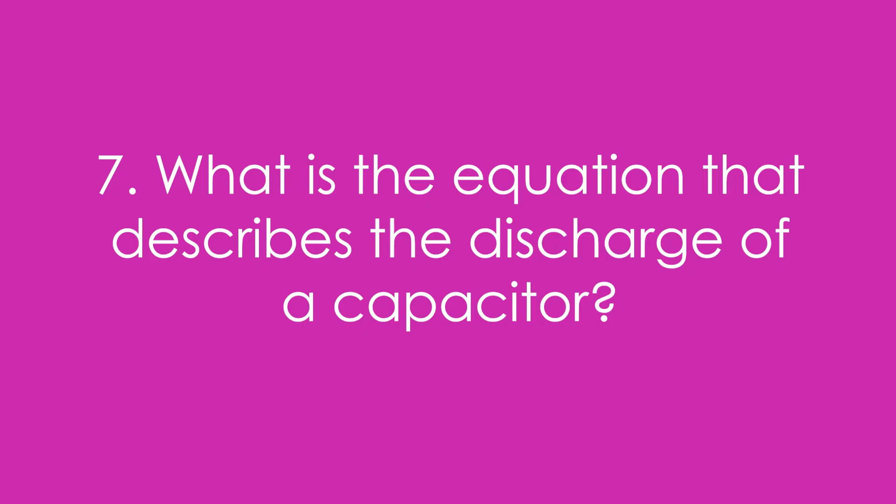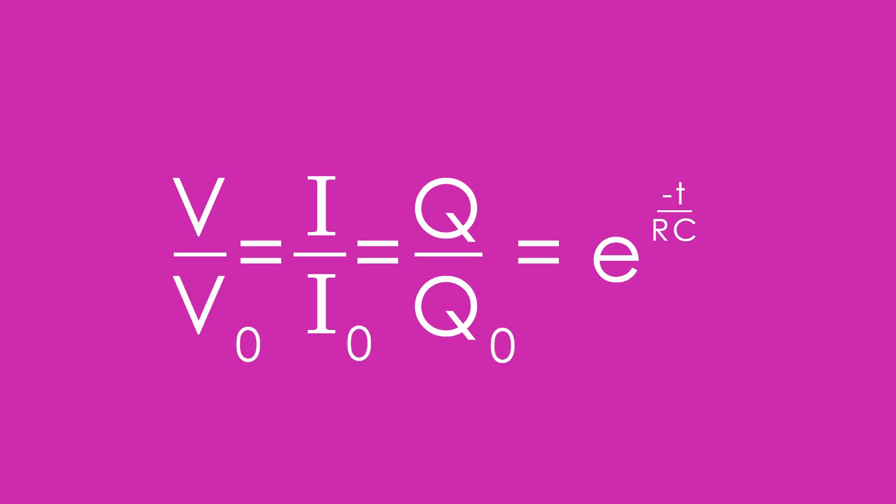Seven, what is the equation that describes the discharge of a capacitor? The decay equation. It's e to the minus T over RC, T being time, R being resistance, and C being capacitance.